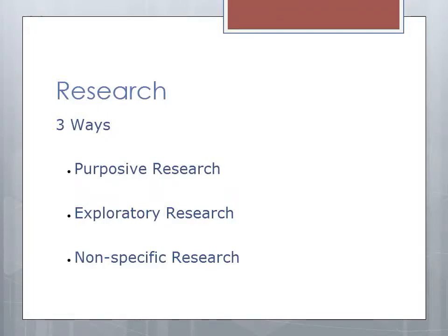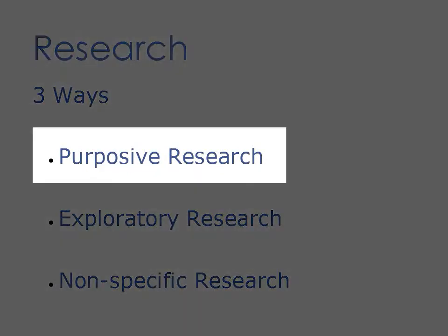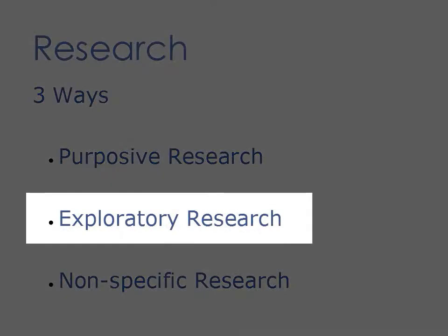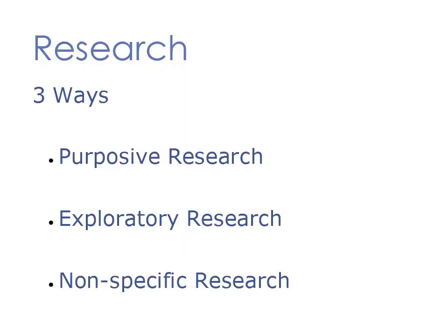Let us now see how to use encyclopedia for research purposes. There are three ways: purposive research, exploratory research, and non-specific research. Let us see how to search for articles in these three ways.